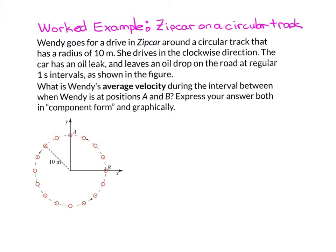Our driver, Wendy, rents a Zipcar and goes for a drive around a circular track. The track has a radius of 10 meters. Unfortunately, the Zipcar has an oil leak and it's dripping oil at a rate of one drop per second. These red circles represent the oil spots that are formed as the car drives around the track.